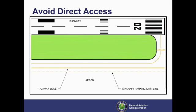This example shows a taxiway placed along the edge of the apron. The apron is a wide expansive pavement with painted lines marking the limit of the apron, the centerline of the taxiway, the taxiway edge, and the aircraft parking limit line.